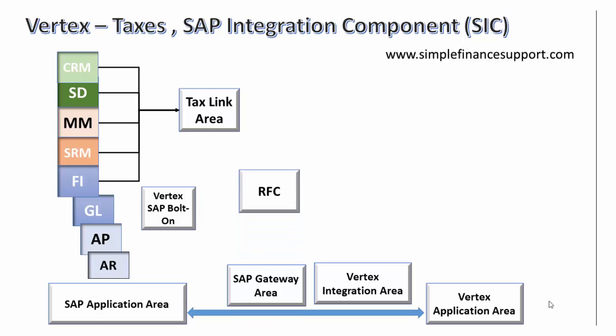There is an RFC — Remote Function Call — which acts as a gateway, a technical mechanism to call other systems, in this case Vertex. The RFC resides in SAP as part of the SAP gateway, which collects information from the tax area and then makes the call to Vertex.